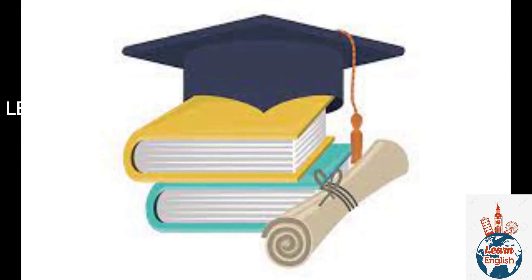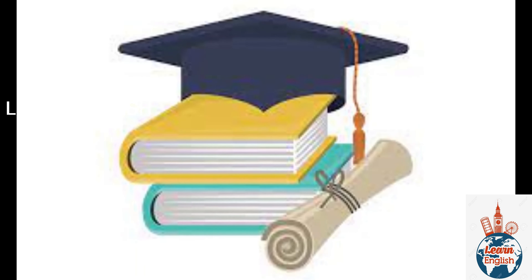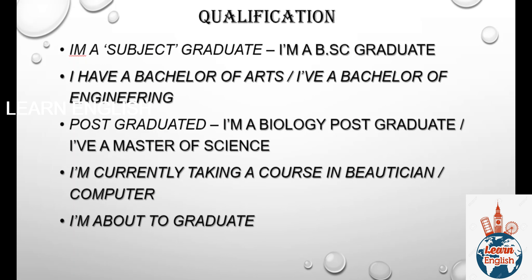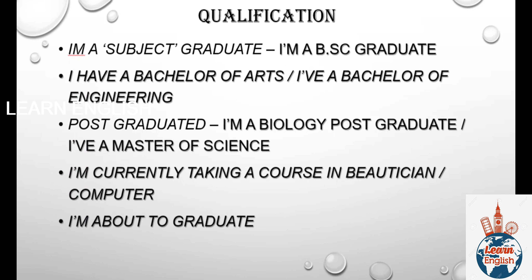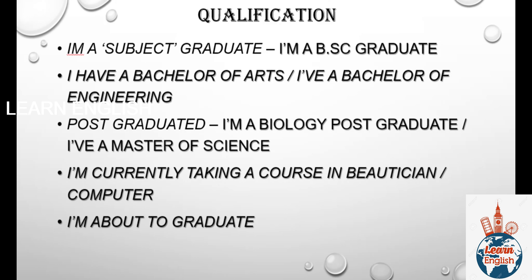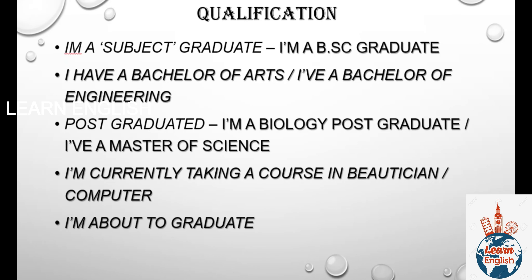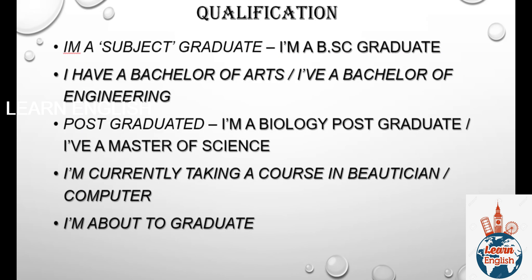For qualifications, you can start with: I am a B.A. graduate, I have a Bachelor of Arts, or I have a Bachelor of Engineering. If you are post-graduated, you can add: I am a biology post-graduate, or I have a Master of Science. If you are currently doing any course, you can say: I'm currently taking a course in beautician or computers. If you are about to graduate in a few months, you can use: I am about to graduate.